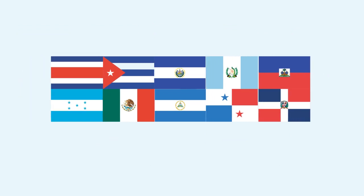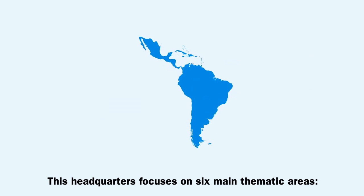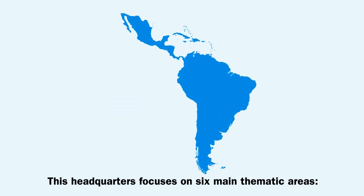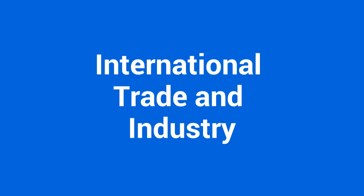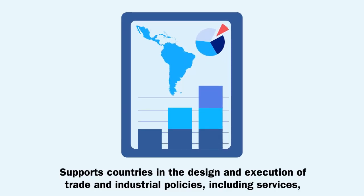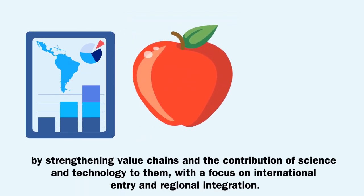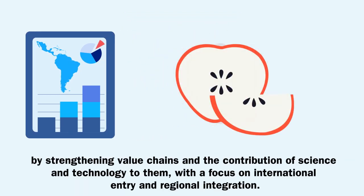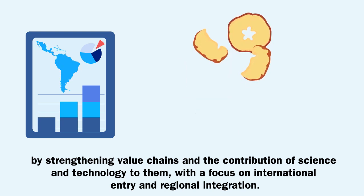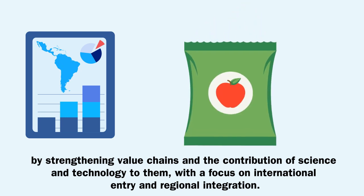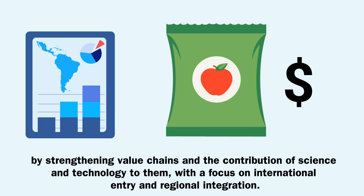This headquarters focuses on six main thematic areas. International Trade and Industry supports countries in the design and execution of trade and industrial policies, including services, by strengthening value chains and the contribution of science and technology to them, with a focus on international entry and regional integration.